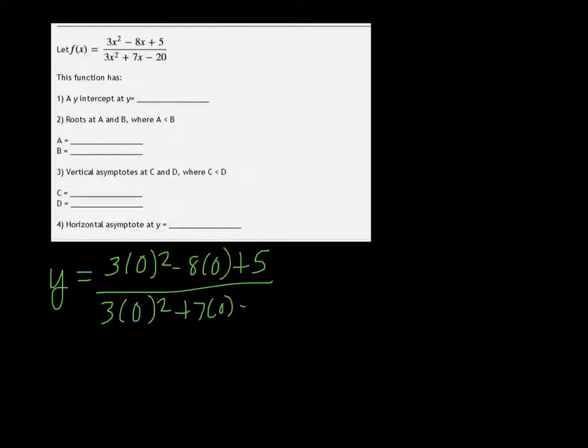To find the y-intercept, we're going to put 0 in for x and solve for y. So 3 times 0 squared minus 8 times 0 plus 5 over 3 times 0 squared plus 7 times 0 minus 20.